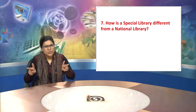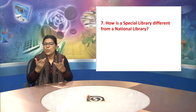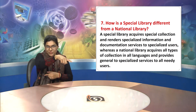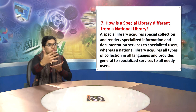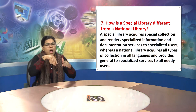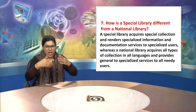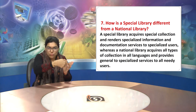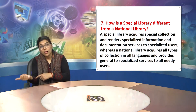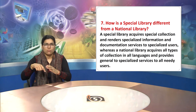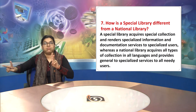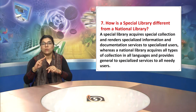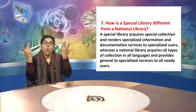How is a special library different from a national library? A special library requires special collection and renders specialized information and documentation services to specialized users. Whereas a national library requires all types of collection in all languages and provides general to specialized services to all needy users.